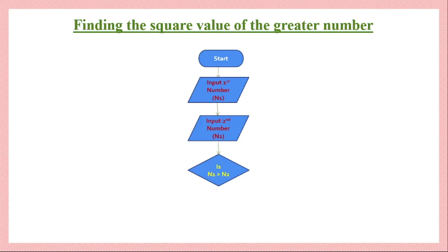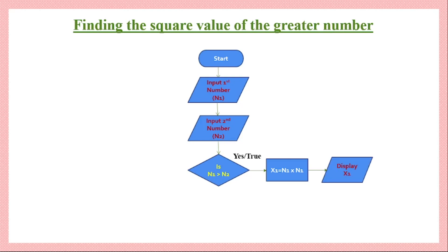Once we know both numbers, we take a decision to determine which number is greater, using the corresponding decision block. The first number is represented by N1 and the second by N2, and the condition checked is whether N1 is greater than N2. If the decision is yes/true, we take N1, calculate its square value represented as X1 using the relevant block, display that output using the relevant output block, and then end the process.